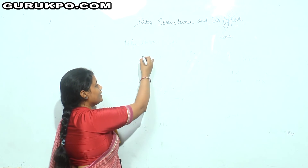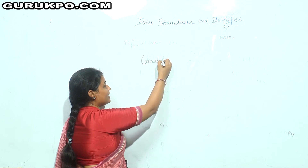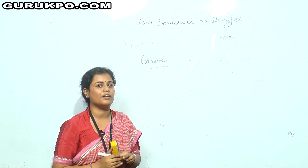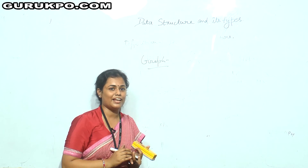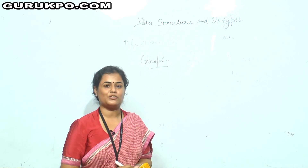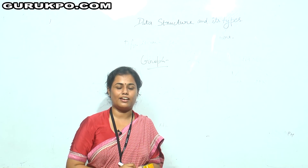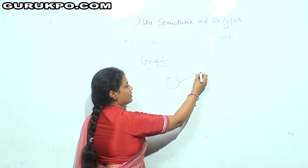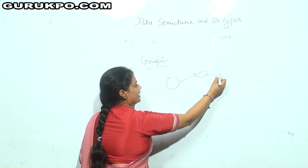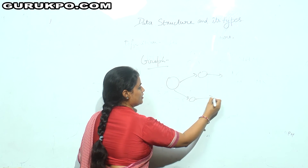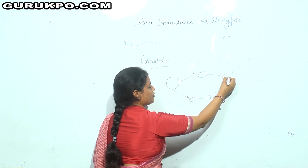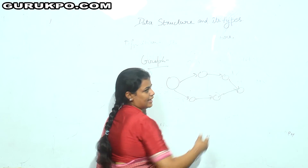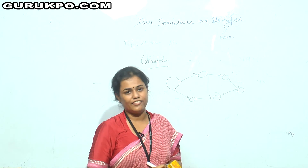Another non-linear data structure is graph. Graph is a non-linear data structure where data is stored in a non-linear fashion but not in a hierarchical model. In a tree the data is stored in hierarchical order, but in a graph it is not. We can say a graph is a connected tree.